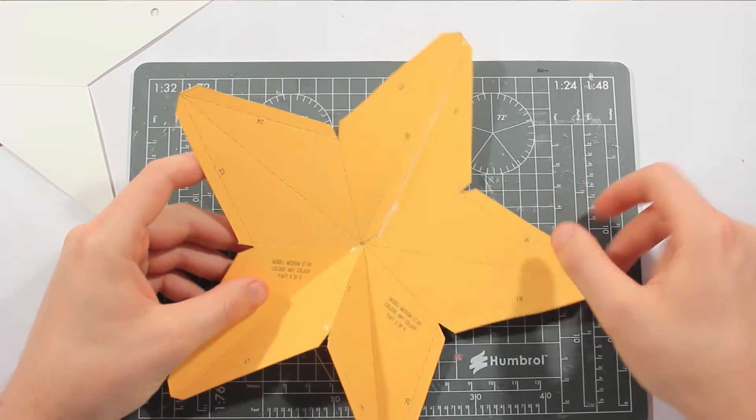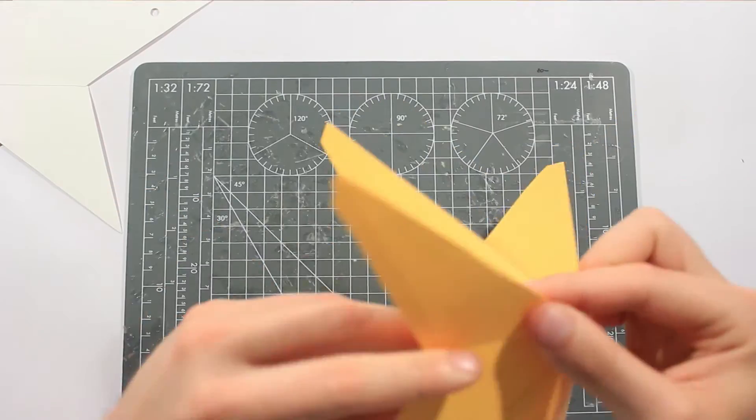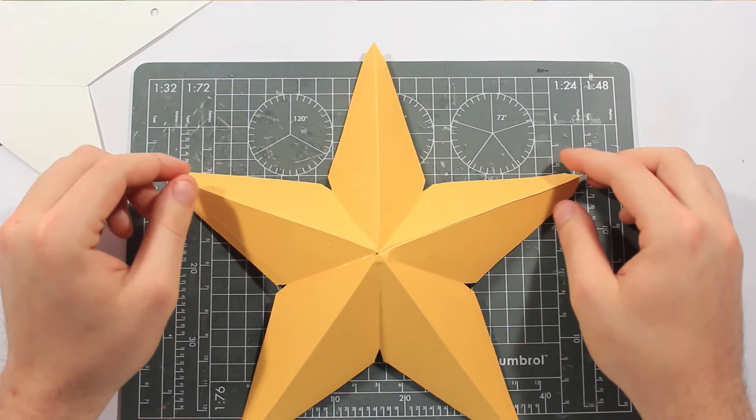So what we have to do now is just fold, like we did on the grey star, the mountain folds and the valley folds. It's coming together.